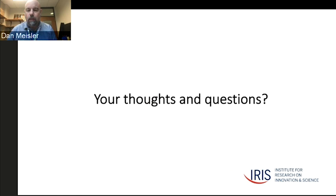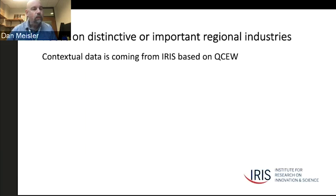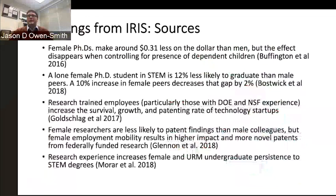Another question had to do with the slide that touched on gender bias and academic success, which prompted: how does IRIS set priorities for its research reports? These findings are out of research driven by the academic investigators who are listed—these are all published papers or working papers that I've summarized. We prioritize report building; the initial set of reports was developed through a pilot process with the senior research officers of the Big Ten Academic Alliance.